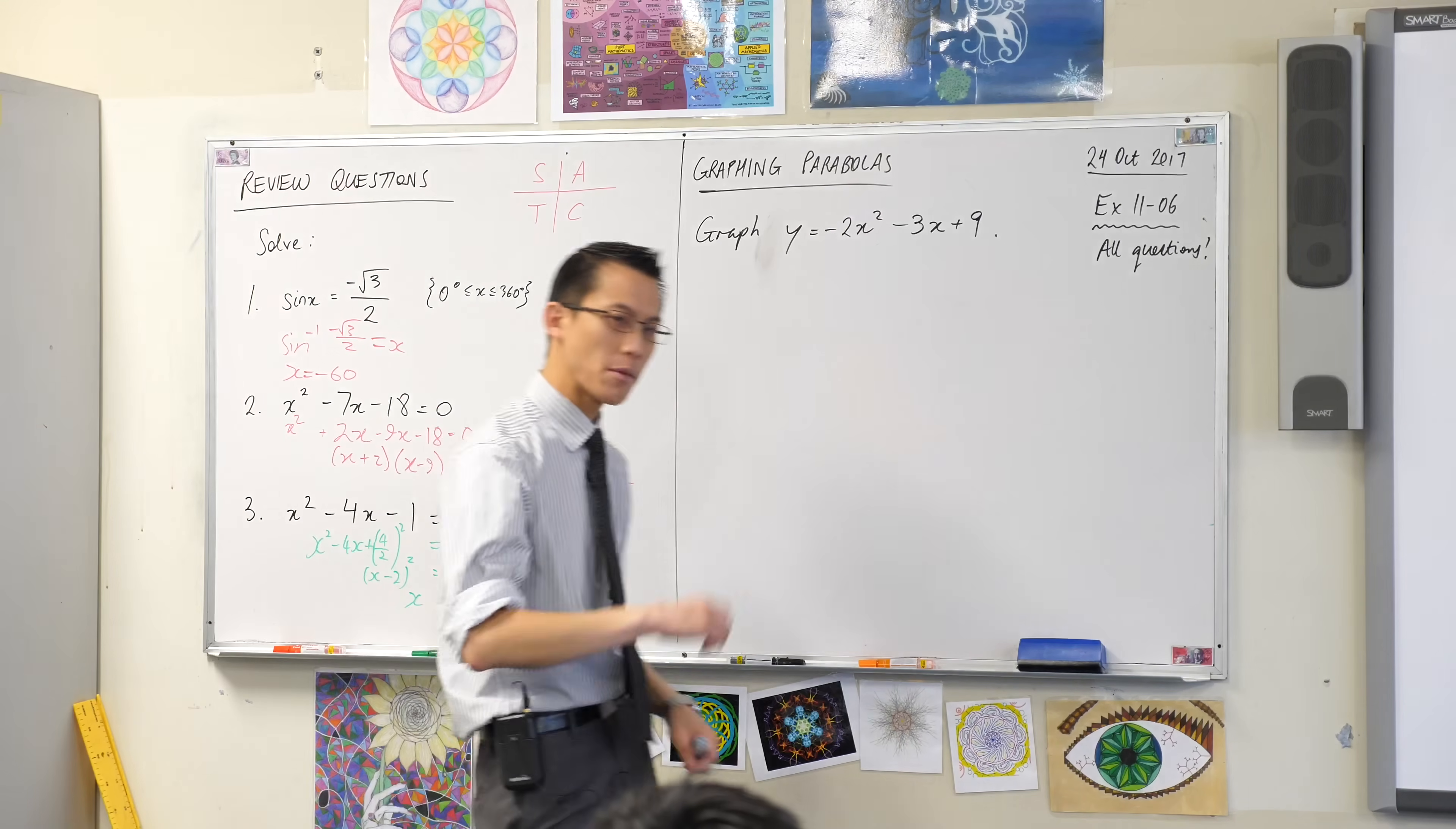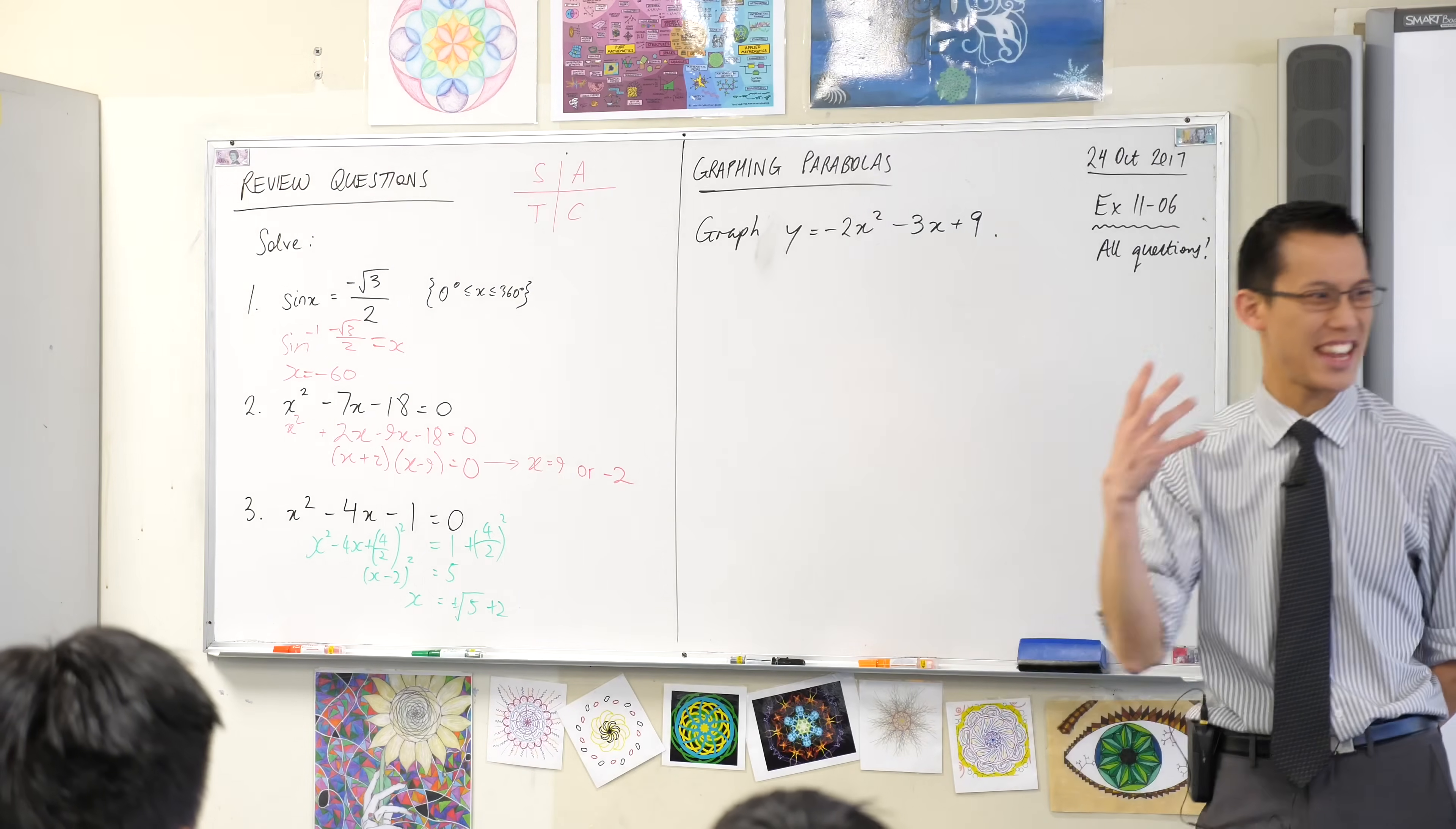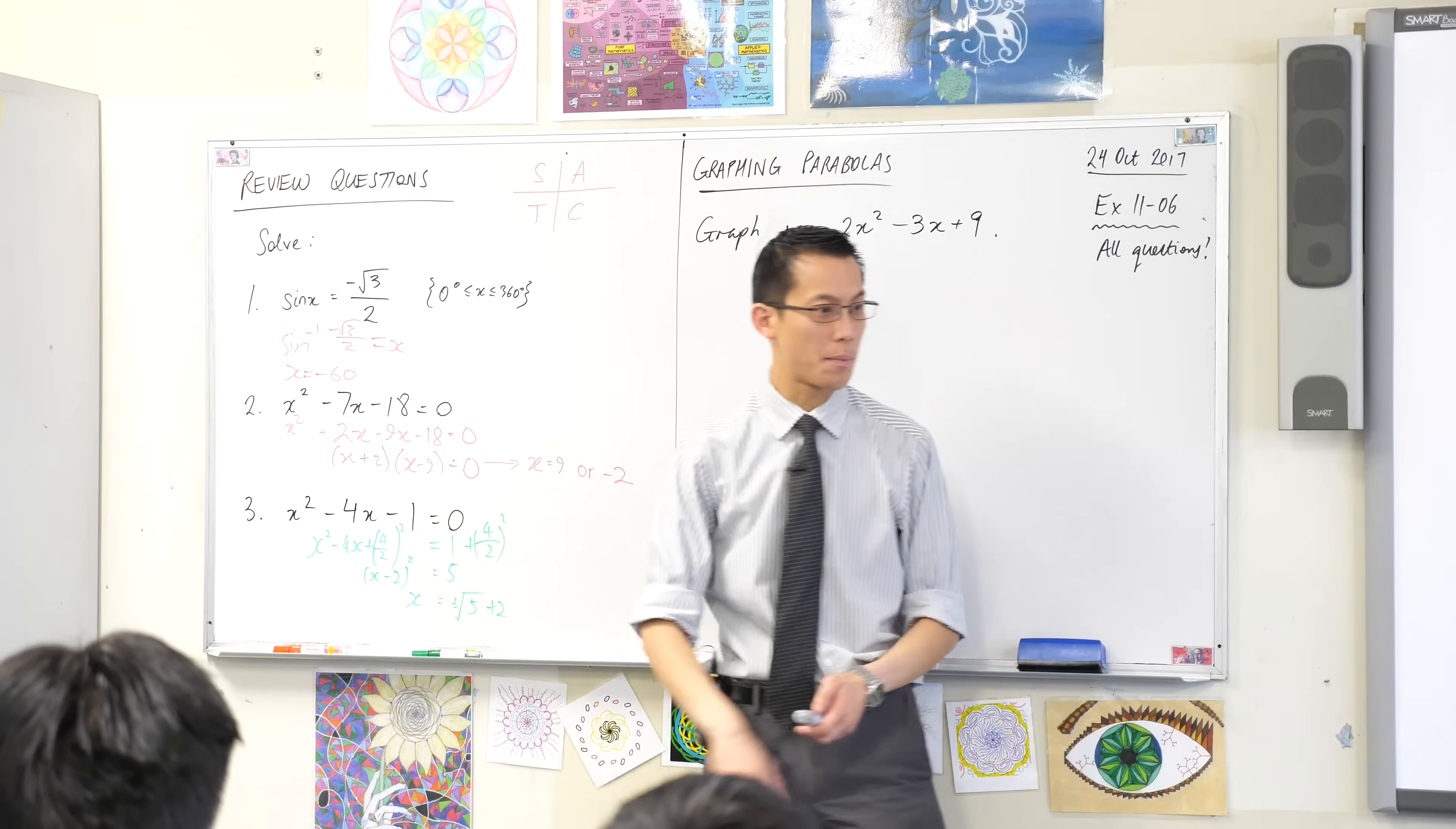Let's have a look at the quadratics, okay? So number two, you can see negative seven, negative 18. You can think of the pair of numbers, can't you? And you're going to get positive two, negative nine. So it's been broken apart successfully.